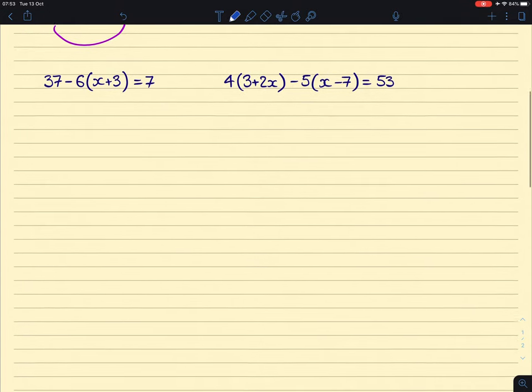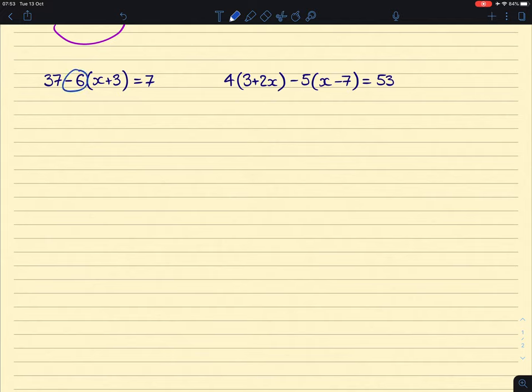Next one, break out the brackets again. This time we've got to be careful because that's a minus 6 that's before our bracket. So minus 6 times x will give us a minus 6x, and a minus 6 times 3 will give us a minus 18. Now, I didn't forget about that 37, but it's technically separate from that bracket. So my first focus was breaking out the brackets, and then we could just fill in everything else afterwards. So we have this 37 at the beginning, and we have this equals 7.